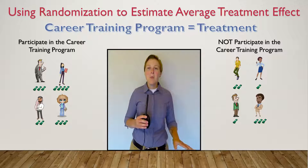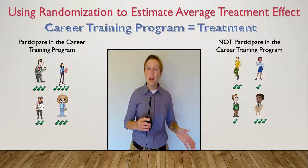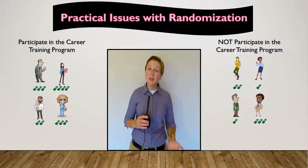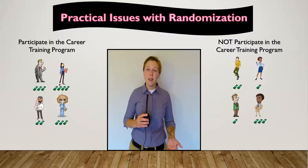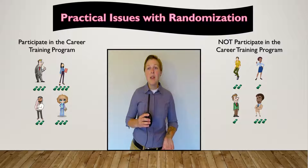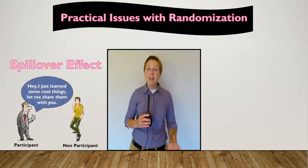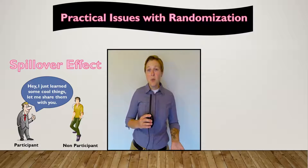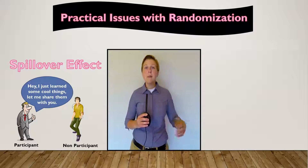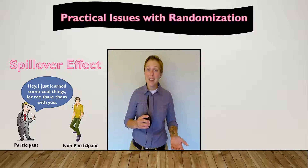Not so fast. While randomization appears to be the magic bullet for our problem, in reality it is very difficult. Randomly assigning who gets a treatment and who is left without can be politically difficult, since those not given the treatment will be upset that they were not provided with the same opportunities as their peers. Another big issue with this randomization scheme is called the spillover effect — perhaps those that received the career training program got positions where they were then able to train other employees, so the effect spilled over to those that did not have access to the program.